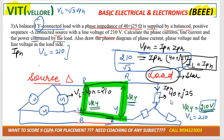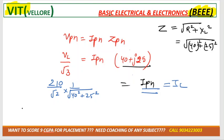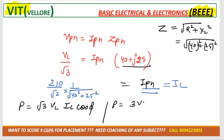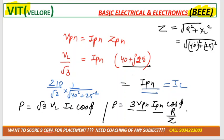Next they are asking for the power consumed by the load. The formula is P = √3 × VL × IL × cos φ, or equivalently P = 3 × VPH × IPH × cos φ. Here cos φ = R/Z, where R = 40 and Z = root of (40² + 25²).